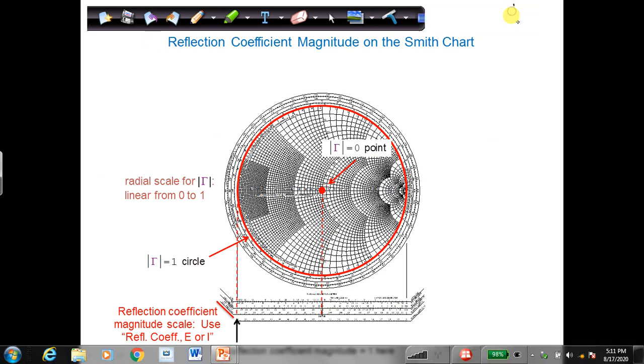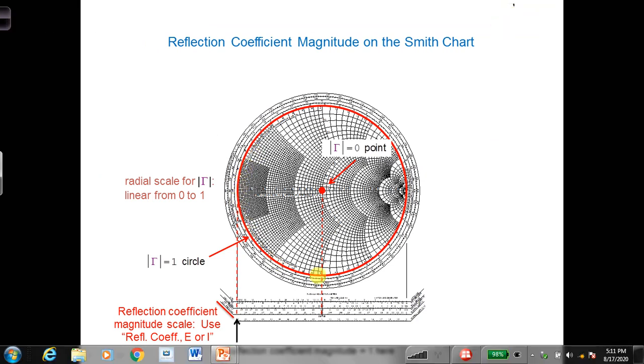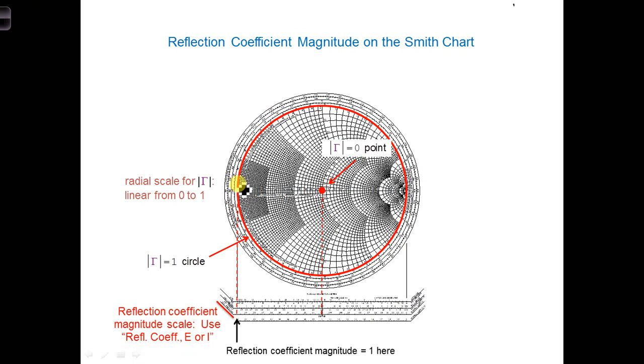A reflection coefficient of 1 corresponds to the very outside of the Smith chart. If it's anywhere on this red circle, it corresponds to the very outside of the scale and you get a reflection coefficient magnitude of 1. The reflection coefficient magnitude changes linearly between 0 at the center of the Smith chart and 1 on the outside of the Smith chart.